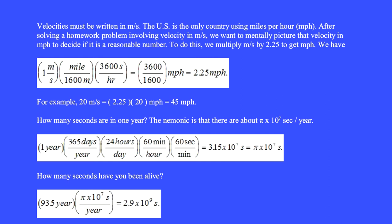How many seconds are in one year? The mnemonic is that there are about pi times 10 to the seventh seconds per year. This one year is multiplied by 365 days per year, 24 hours per day, 60 minutes per hour, 60 seconds per minute. And after canceling, we get 3.15 times 10 to the seventh seconds, which is about pi times 10 to the seventh seconds.